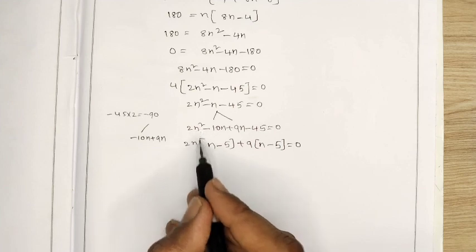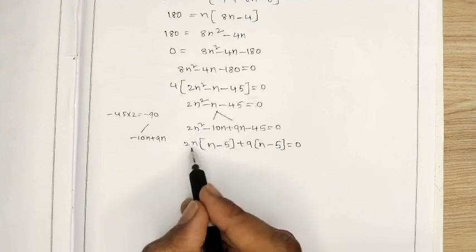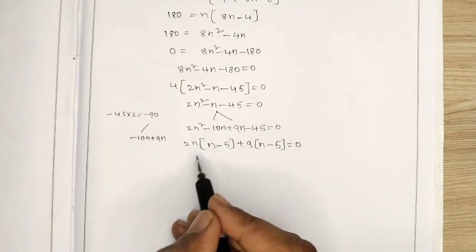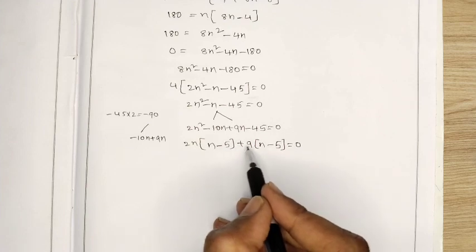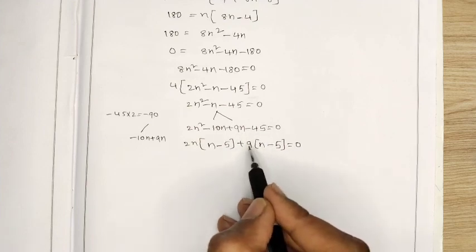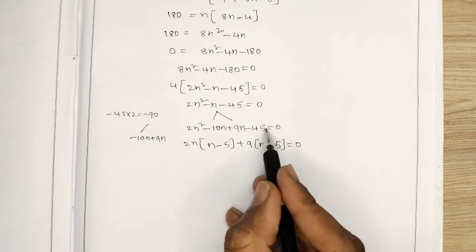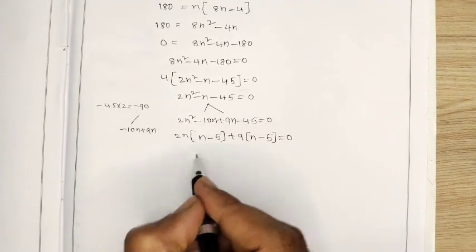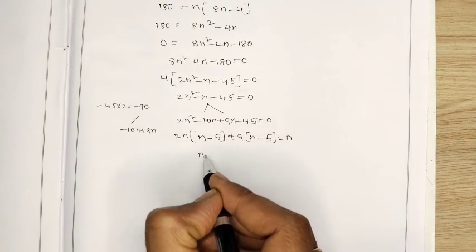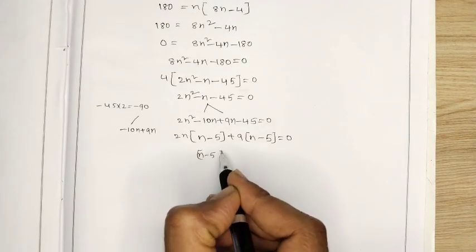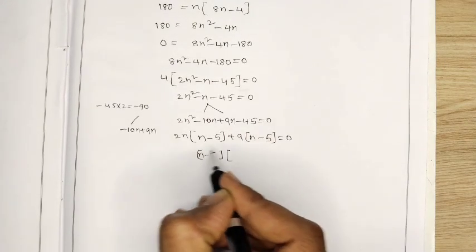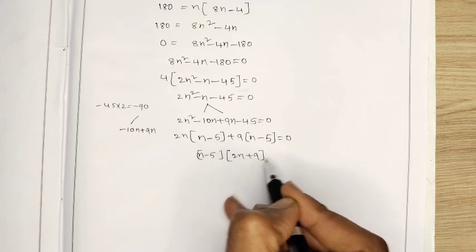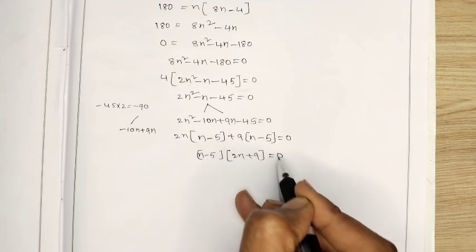We check: 2n squared, then 2n into n gives 2n squared; minus 2n into 5 gives minus 10n; 9 into n gives 9n; minus 9 into 5 gives minus 45. It is correct. So n minus 5 is common, remaining is 2n plus 9, equals 0.